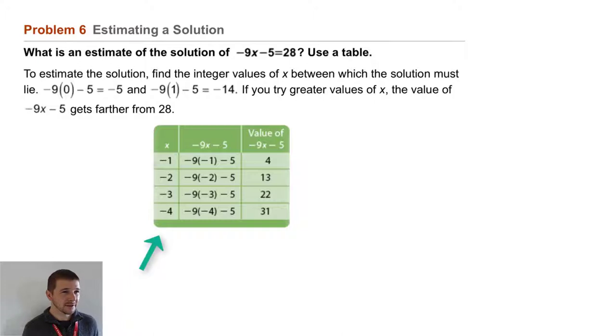X values on the left, the process column with -9x - 5 shown in the middle, and then finally the output or the value of that expression on the far right. So we can try x values of -1, -2, -3, and -4, working in the negative direction.